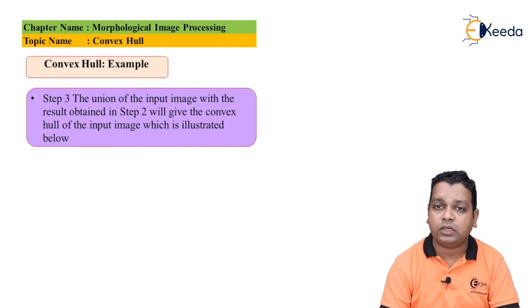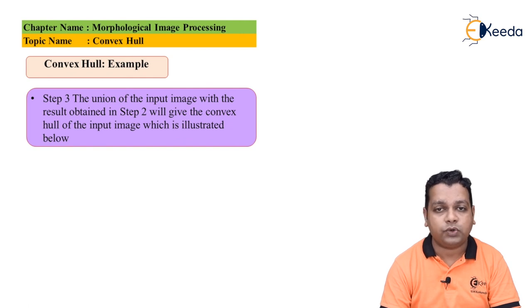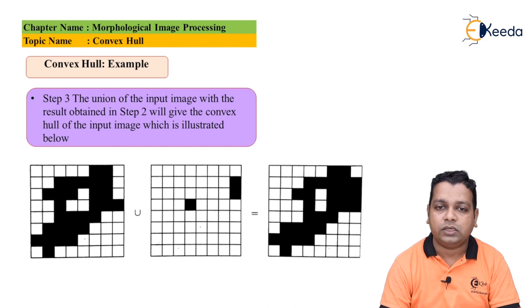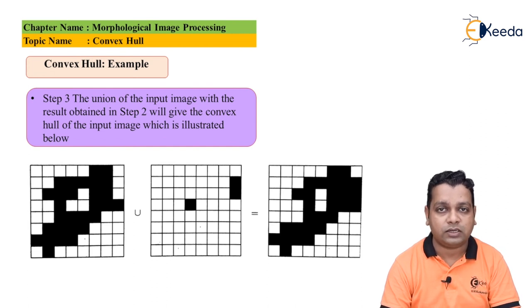Step 3: the union of the input image with the result obtained in step 2 gives the convex hull of the input image. Finding this union we obtain the convex hull represented on the right-hand side.